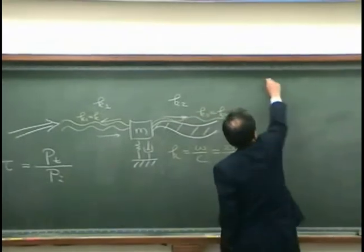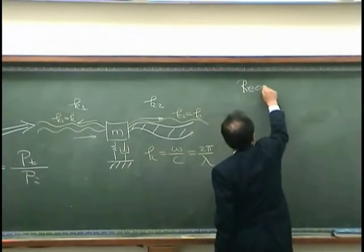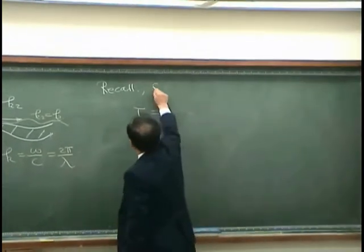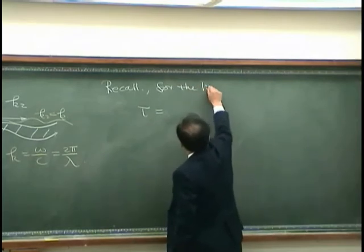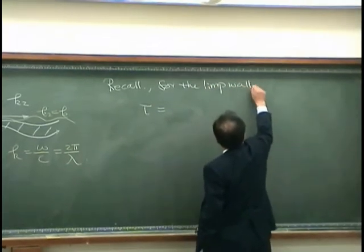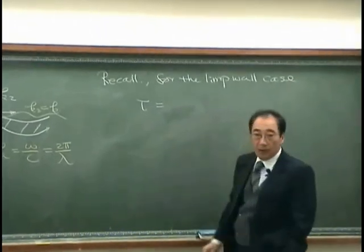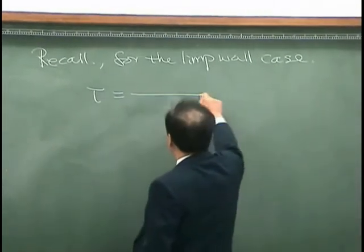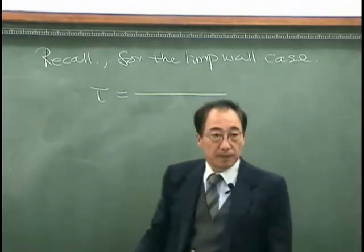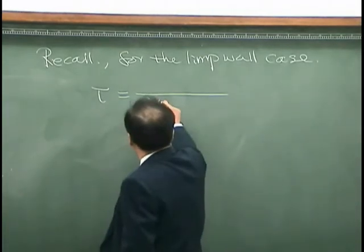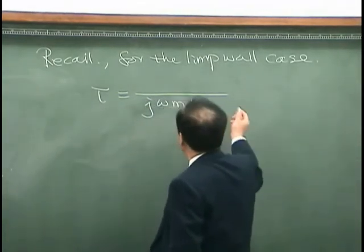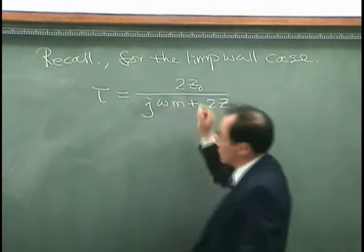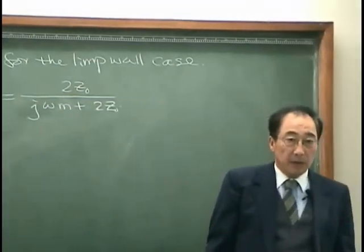Then we can recall that tau was, for limp wall, the tau was j omega m plus 2z0, over 2z0. Right? That was the case.